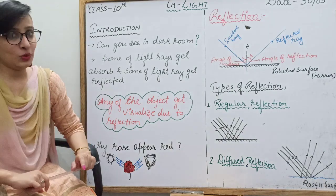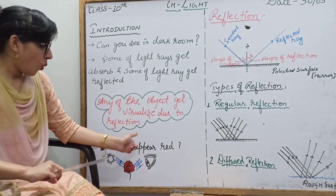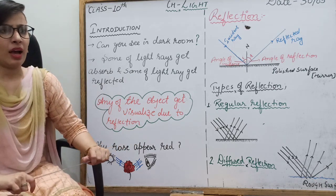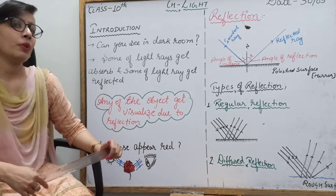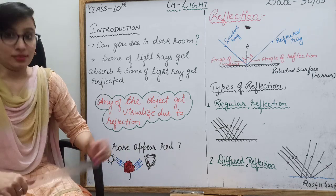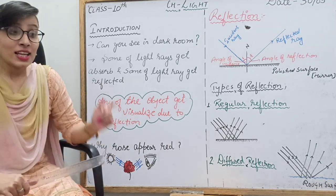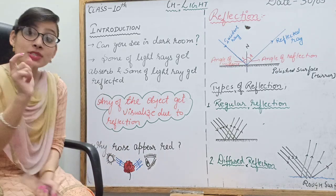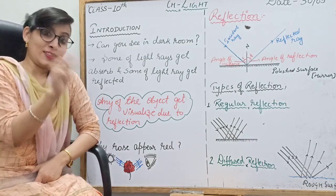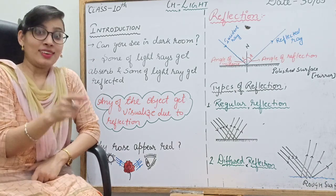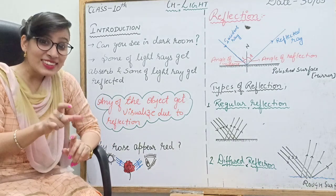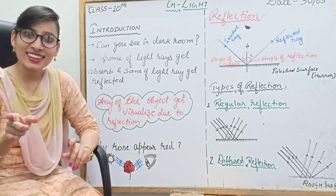Now one more question: Why does a rose appear red? There are different colors of rose — pink, yellow, purple — but let's talk about a red rose. Why does a red rose appear red? It seems like a silly question, but it is a very important question for today's chapter.